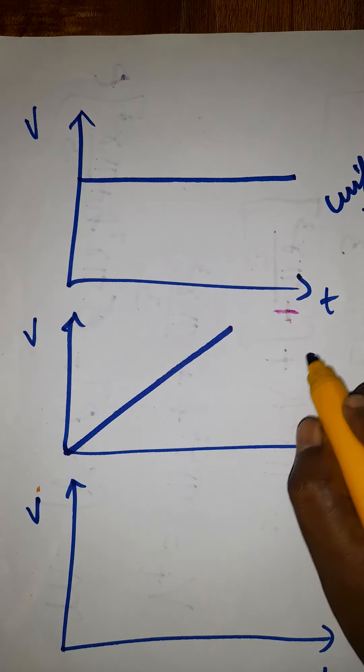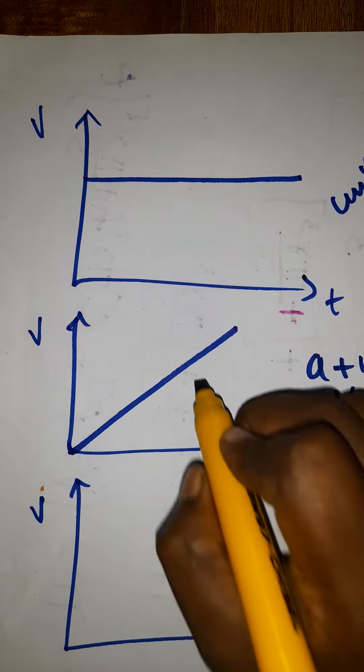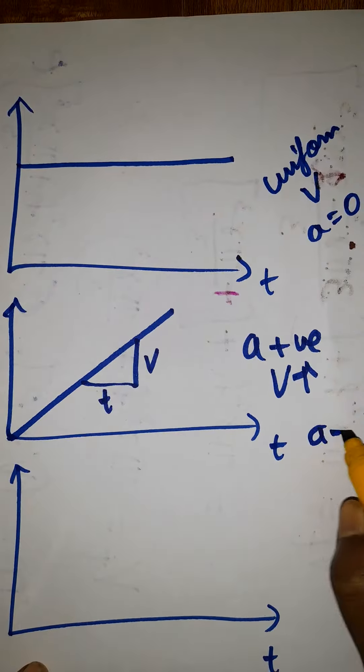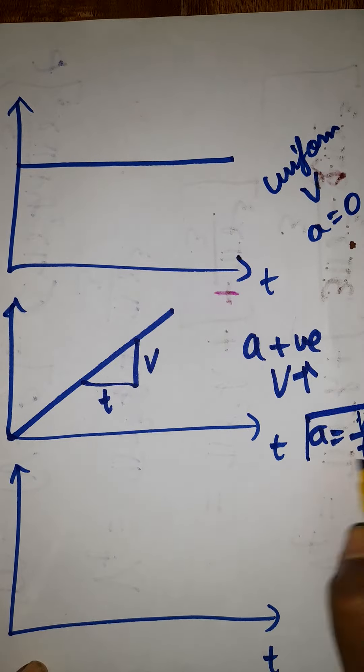we call this positive acceleration. The velocity is increasing. The slope of this graph will be velocity by time, which gives us acceleration. Velocity by time graph gives us acceleration.